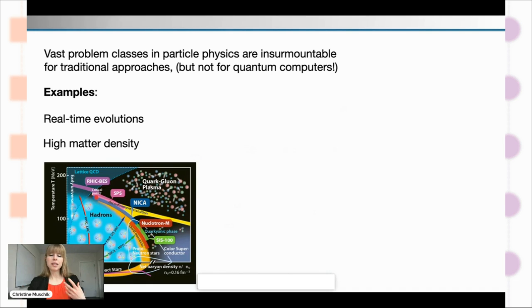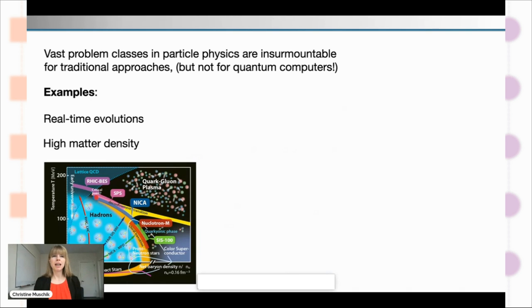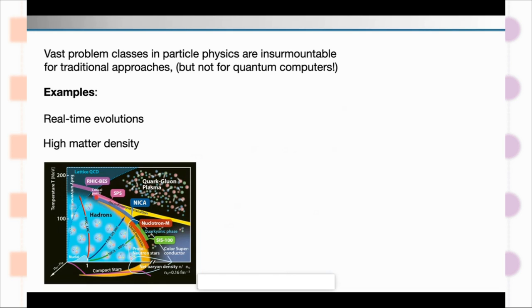This already summarizes the key points. There are really vast problem classes in particle physics that are insurmountable for traditional approaches — insurmountable for classical computers with algorithms we know so far — but they're not insurmountable for quantum computers. There are examples like real-time evolutions or high matter density.